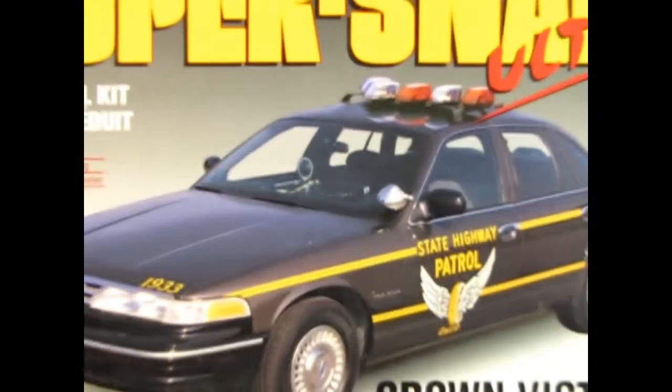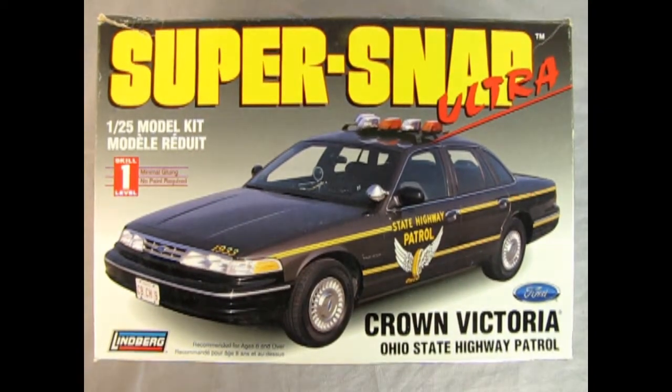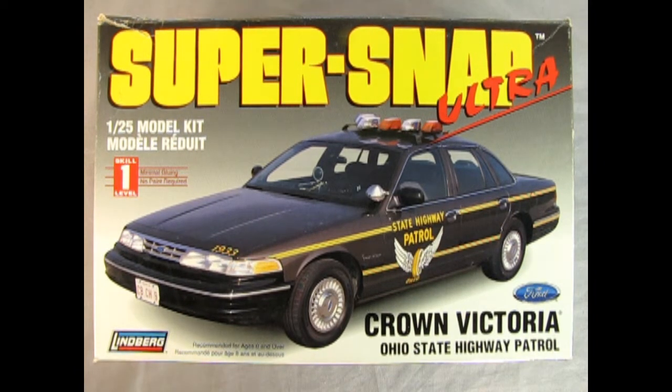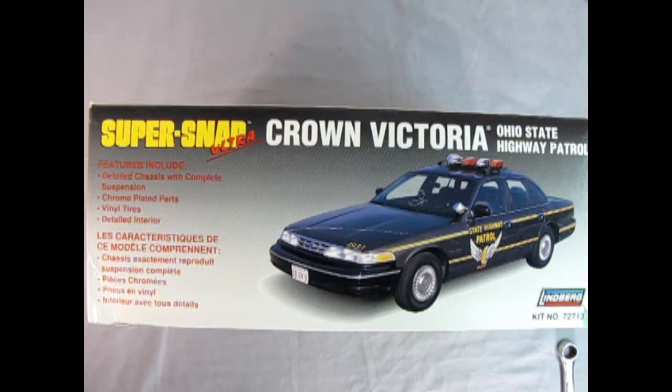Breaker 1-9, Breaker 1-9. We're heading all the way back to 1997 as we check out Lindbergh's Super Snap Ultra Crown Victoria Ohio State Highway Patrol car snap together kit in 1:25th scale. On this side of the box we get another wonderful three-quarter shot of the actual Ford police car. It says you get a detailed chassis with complete suspension, chrome-plated parts, vinyl tires and a detailed interior.